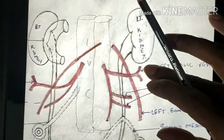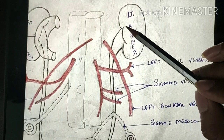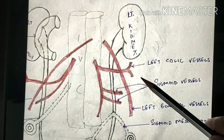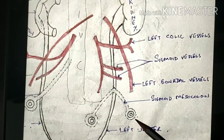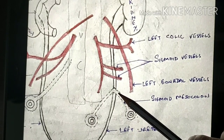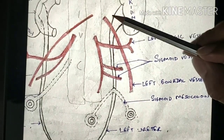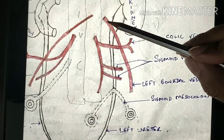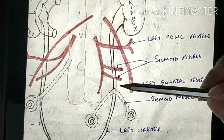The left ureter is crossed by the left colic vessels and passes posterior to the sigmoid colon. At the apex of the mesocolon is the inter-sigmoid fossa, which serves as a valuable landmark to identify the left ureter. The left gonadal vessels will cross the left ureter anteriorly, along with the sigmoid vessels.